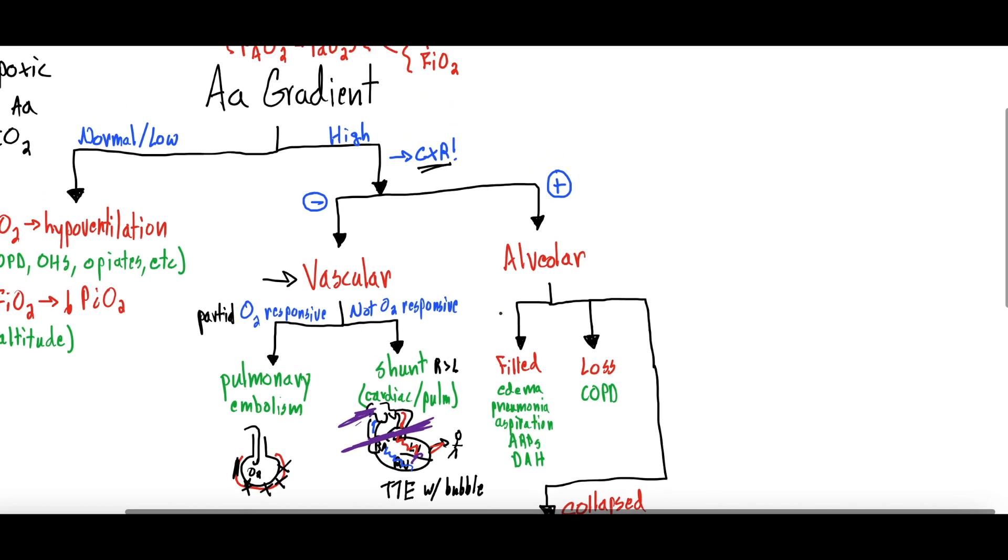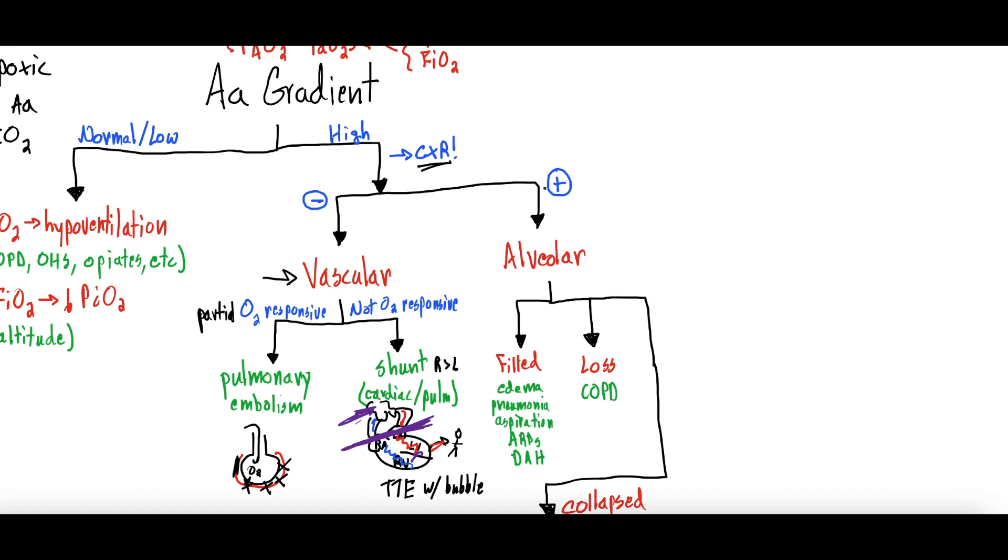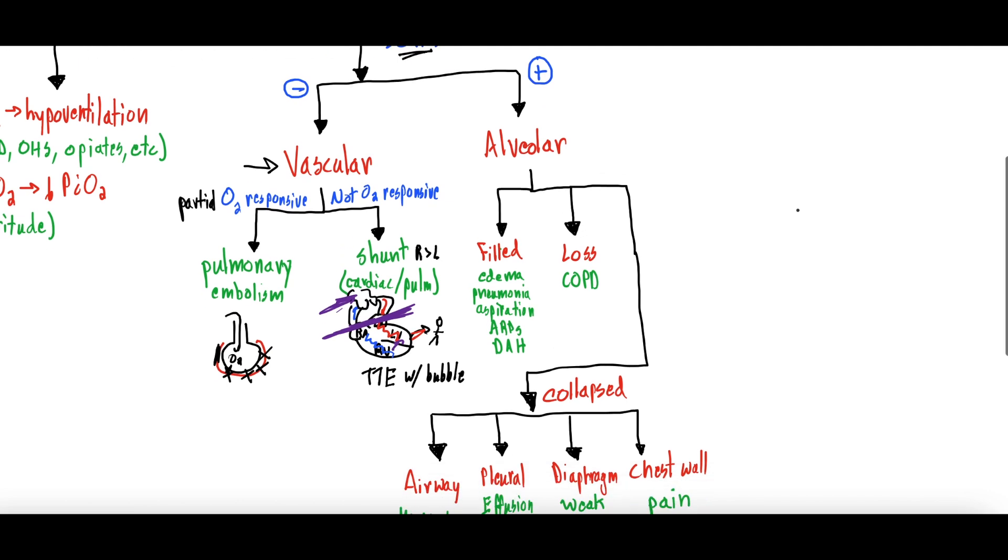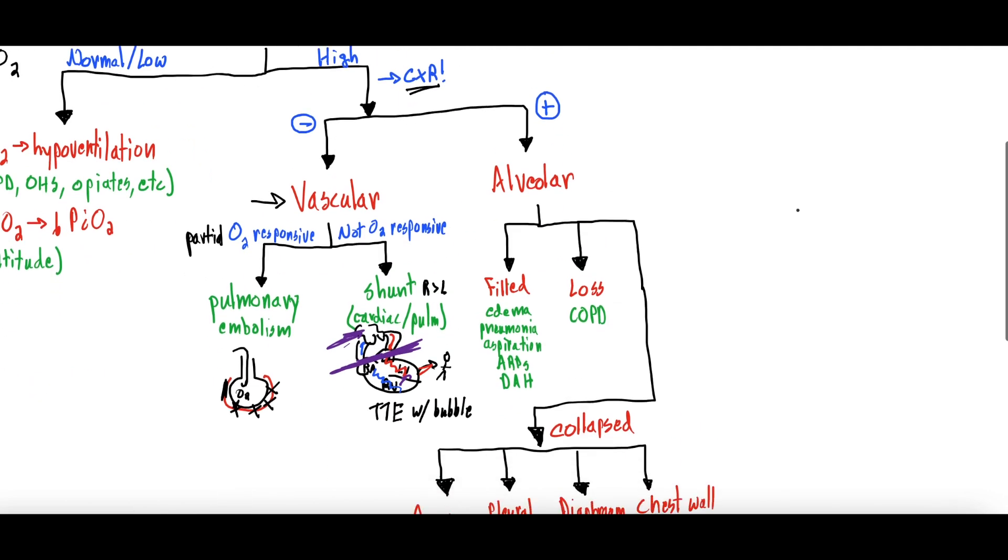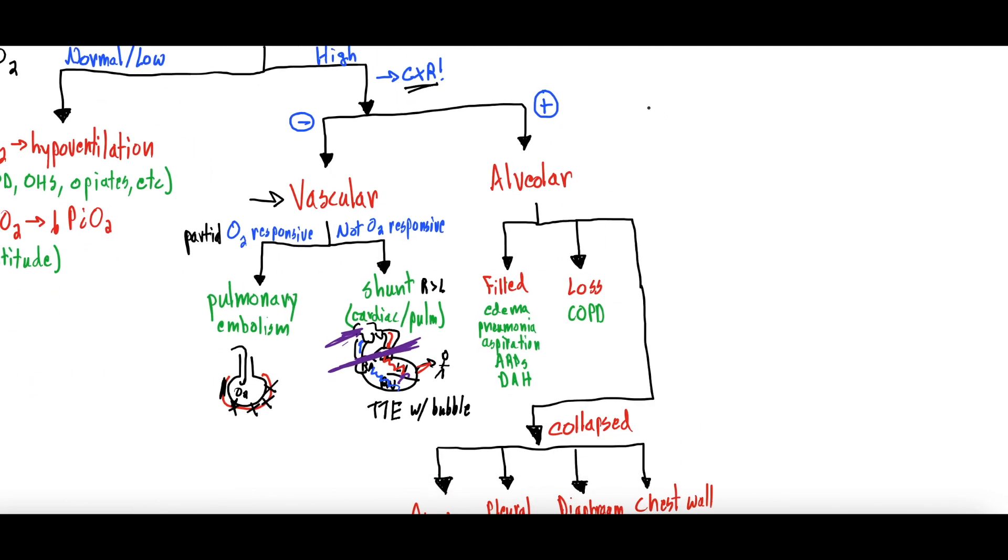So what if you have a high A-a gradient, you get that chest x-ray and it's positive, it's abnormal. Then you have an alveolar cause of your hypoxemia. Meaning if we draw another alveoli, here's an air sac, you're getting oxygen in, but what you're not able to do - here's an artery around the alveoli and that's supposed to be oxygen - what you're not able to do is diffuse that oxygen into the artery for some kind of reason. You're having trouble getting that oxygen from the alveoli into the artery itself.